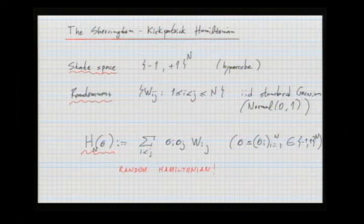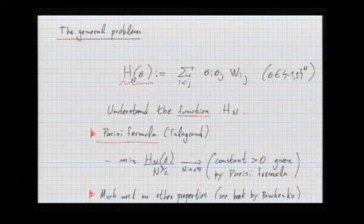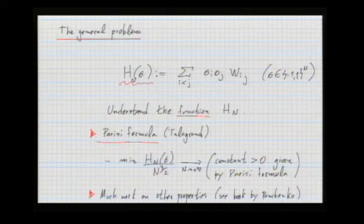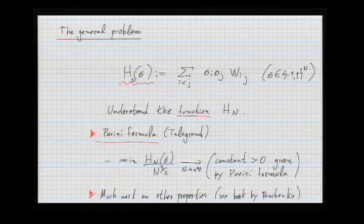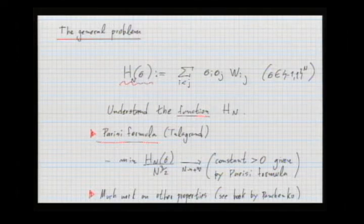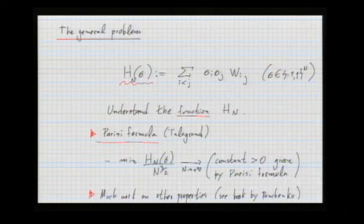For today's talk, we're going to think of this as a very simple example of a random function and understand its properties. The physics part won't play a role. There's a celebrated result by Talagrand confirming a formula from the physics literature by Giorgio Parisi, which says: if you compute the minimum of this function on the hypercube of size N, divide by N to the three-halves, and take the negative, as N goes to infinity this converges to a positive constant given by the very complicated Parisi formula.